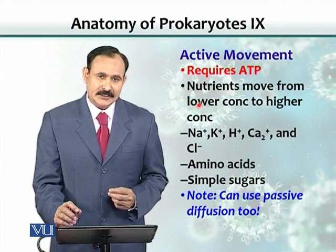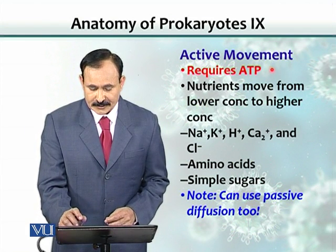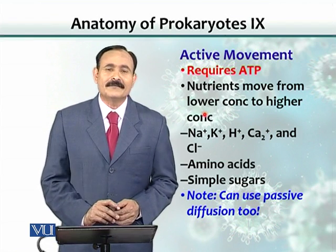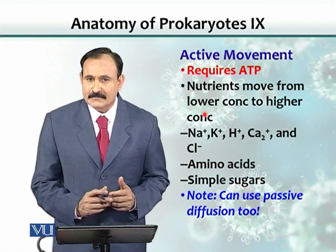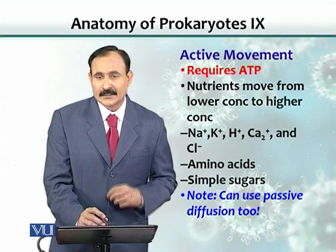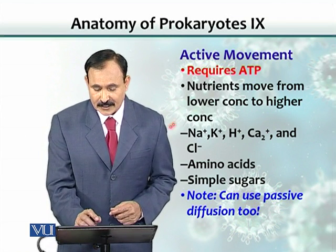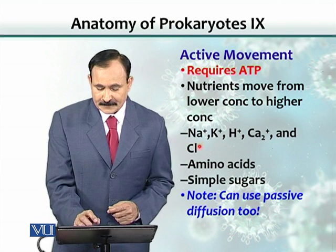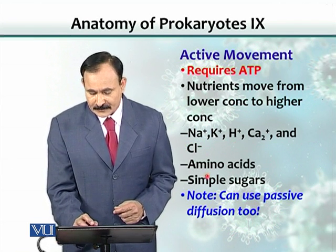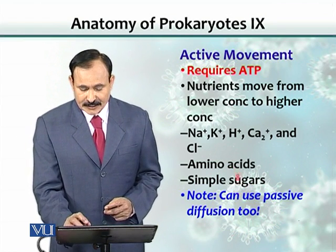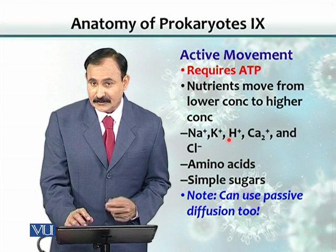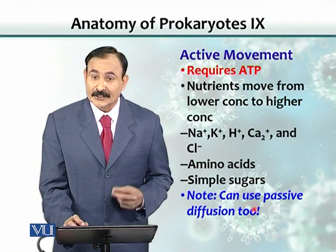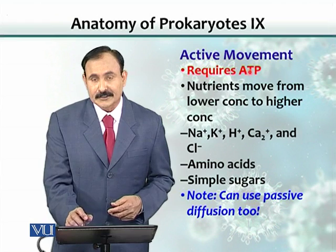Active movement requires ATP and energy. Some nutrients need to move from lower concentration to higher concentration because nutrients are not always abundantly available, and the cell must have a mechanism to acquire scarce food. Examples include sodium, potassium, hydrogen, calcium, chloride, some amino acids, and sugars. Note that when these molecules are abundantly present outside, they can also diffuse passively, but when they are low in abundance, the cell uses energy to bring them in.